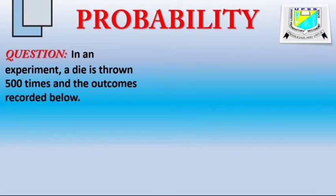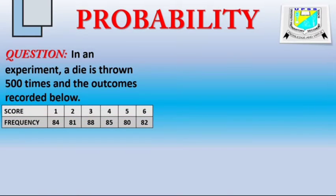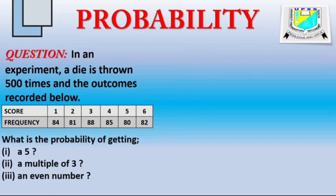In an experiment, a die is thrown 500 times, and the outcomes are recorded below. And of course, the outcomes are in a table. What is the probability of getting a 5, a multiple of 3, and lastly, an even number?